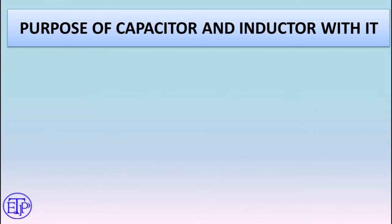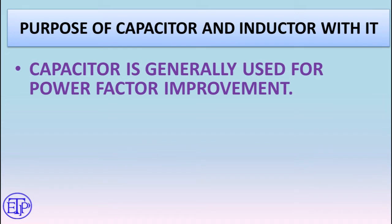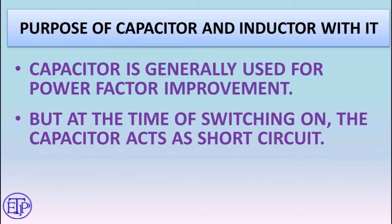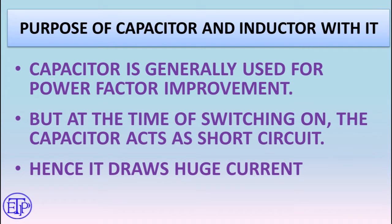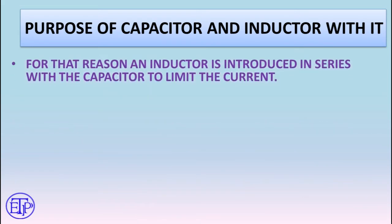Purpose of capacitor and inductor together: We know that a capacitor is generally used for power factor improvement. However, at the time of switching on the capacitor, it acts as a short circuit and draws a huge current. The capacitor opposes sudden change of voltage, so whenever you switch on a capacitor, it acts like it has no internal voltage — drawing huge current to get charged — and gradually the voltage builds up and the current reduces. But this huge initial current may damage the capacitor.